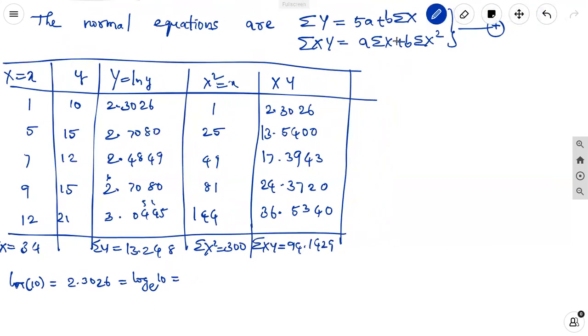The equation 4 means this is the equation 4. Sigma y is 13.248 equal to 5a plus sigma x is 34b. It is the equation 5. And the sigma xy value is 94.1429 equal to 34a plus sigma x squared is 300b. The solving of these two equations, it is equation 6.